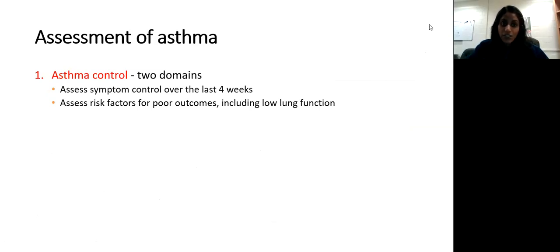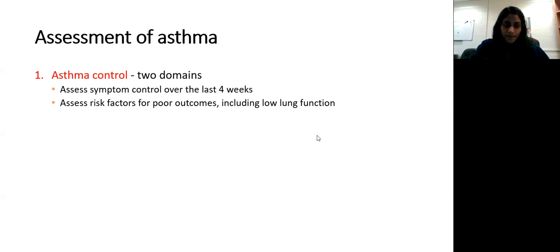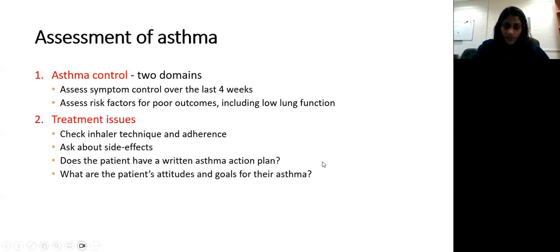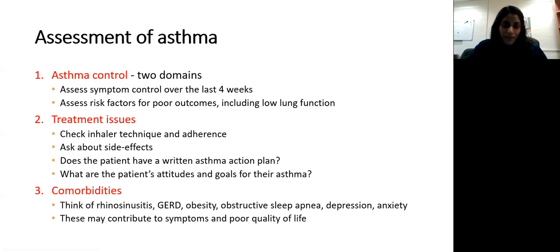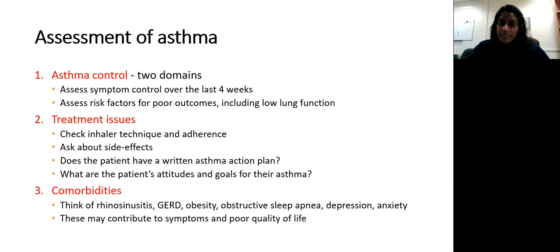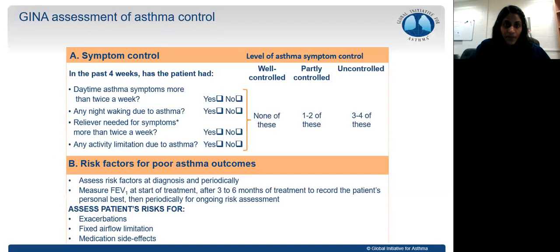It is very important to distinguish controlled asthma from severe asthma. When assessing asthma, number one: identify the severity. Number two: assess asthma control — how well have symptoms been controlled in the last four weeks, and do they have risk factors for poor outcomes including poor lung function? For every patient, always check inhaler technique and adherence, ask about side effects, ensure they have a written asthma action plan, understand patient attitudes and goals, and consider comorbidities such as acid reflux, obesity, OSA, and depression.